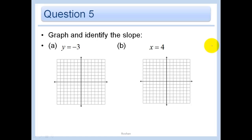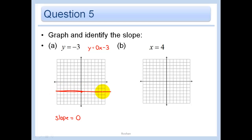When we just have y = -3, what is our slope? Our slope is zero because y equals any constant is always a horizontal line — it could be written as y = 0x - 3. A slope of zero looks like a horizontal line. And for x = 4, no matter what y is, x is always 4 — that is a vertical line with undefined slope.